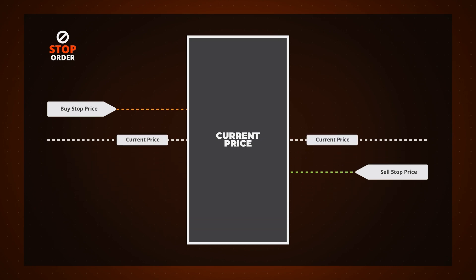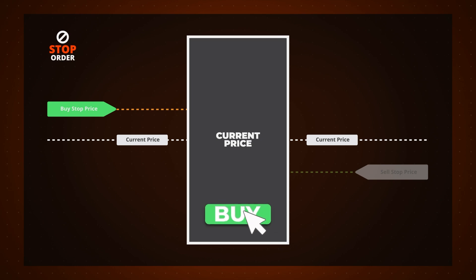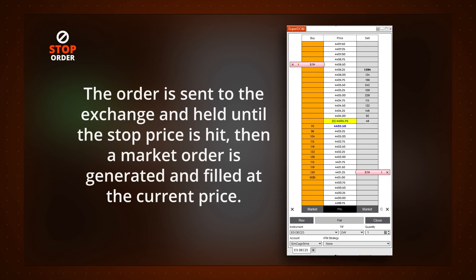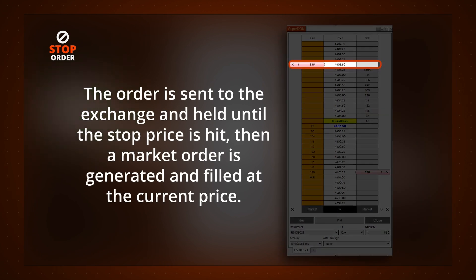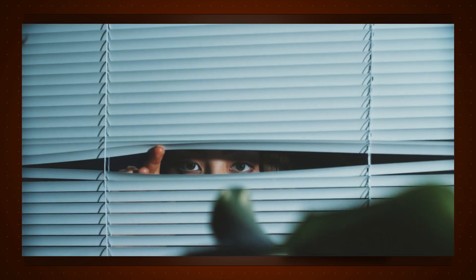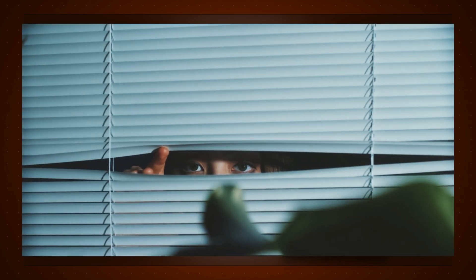When placing a buy stop order, the stop order price must be set above the current market price. Once you click buy, the order is sent to the exchange and held until the stop price is hit. Then a market order is generated and filled at the current price. Stop orders that are sent to the exchange are hidden and, as a result, are not visible to other traders.